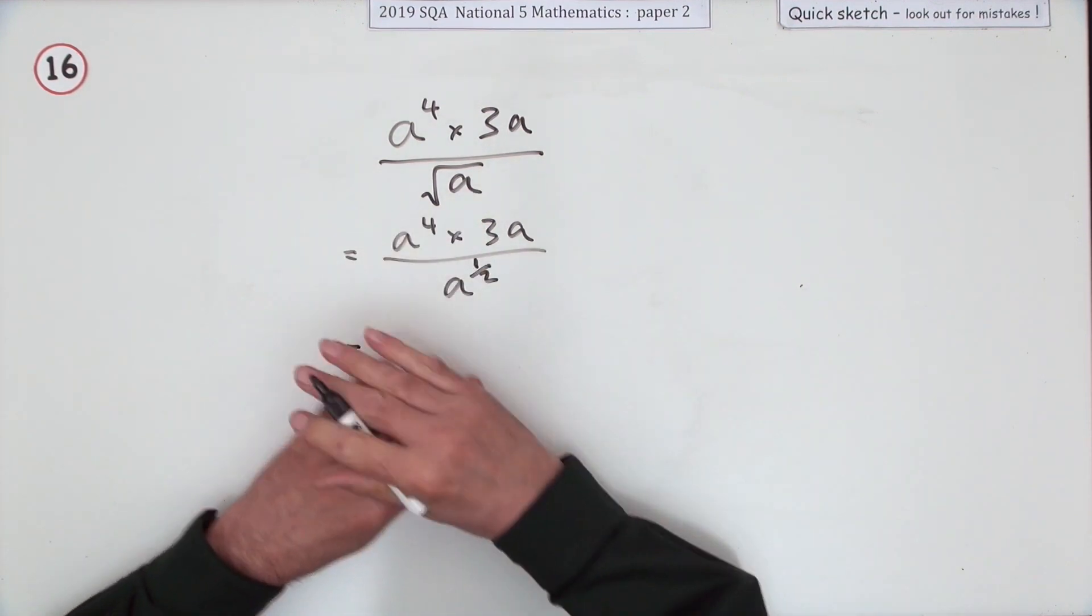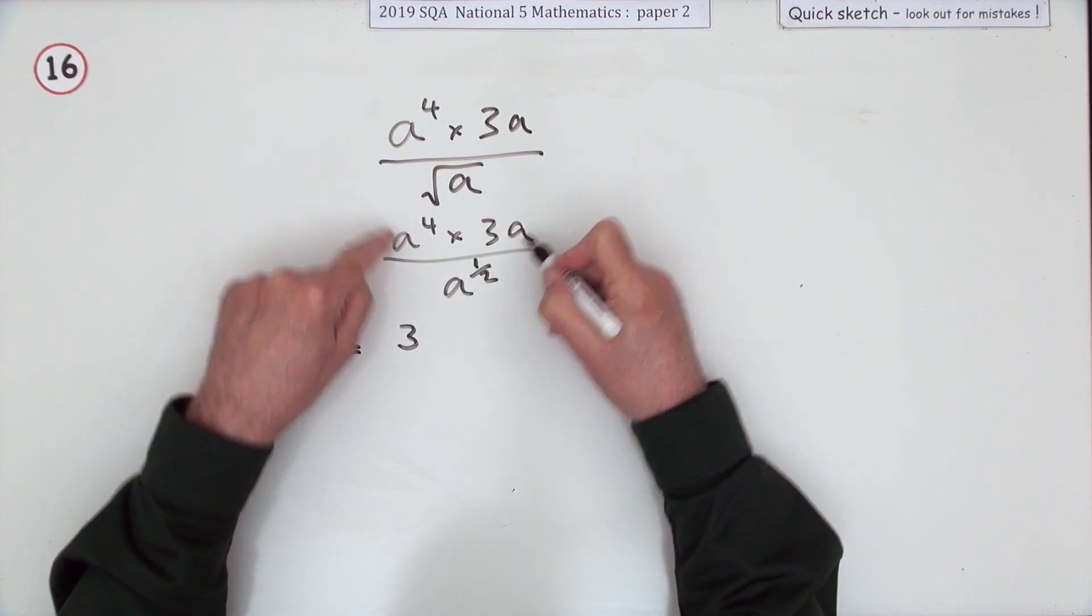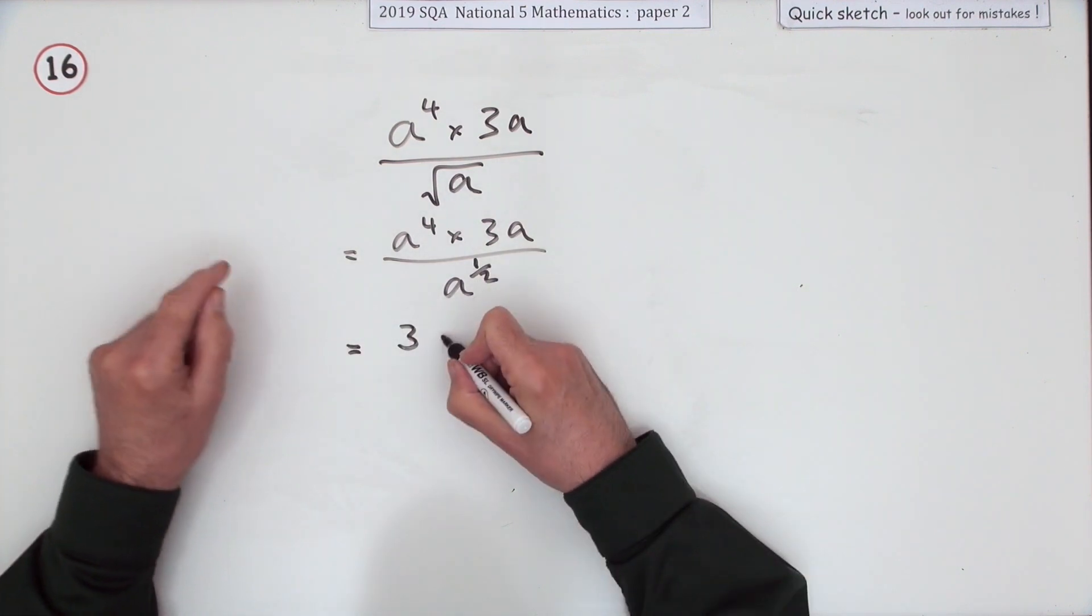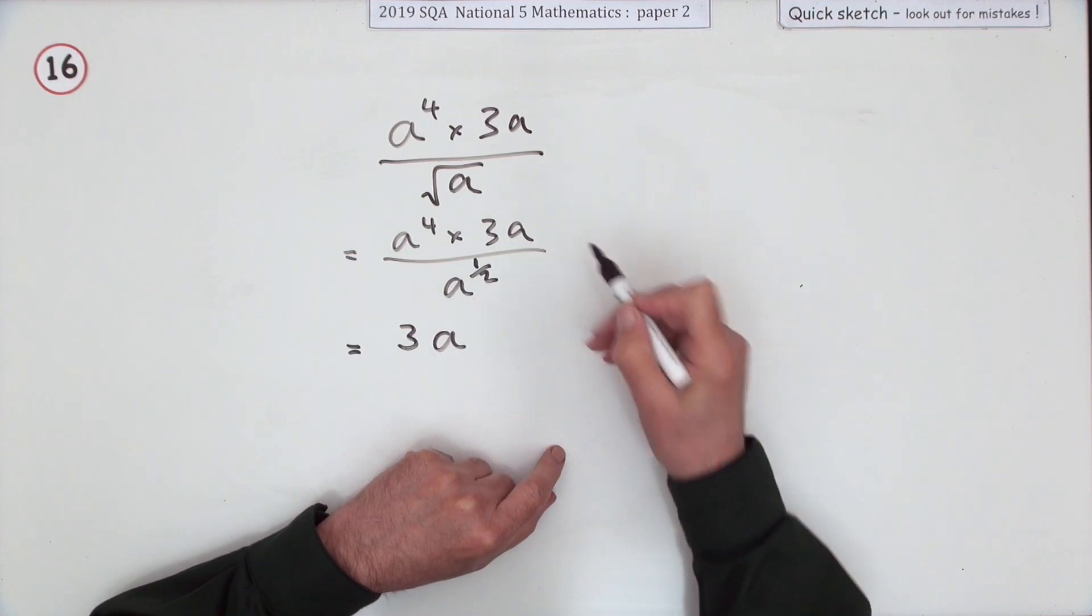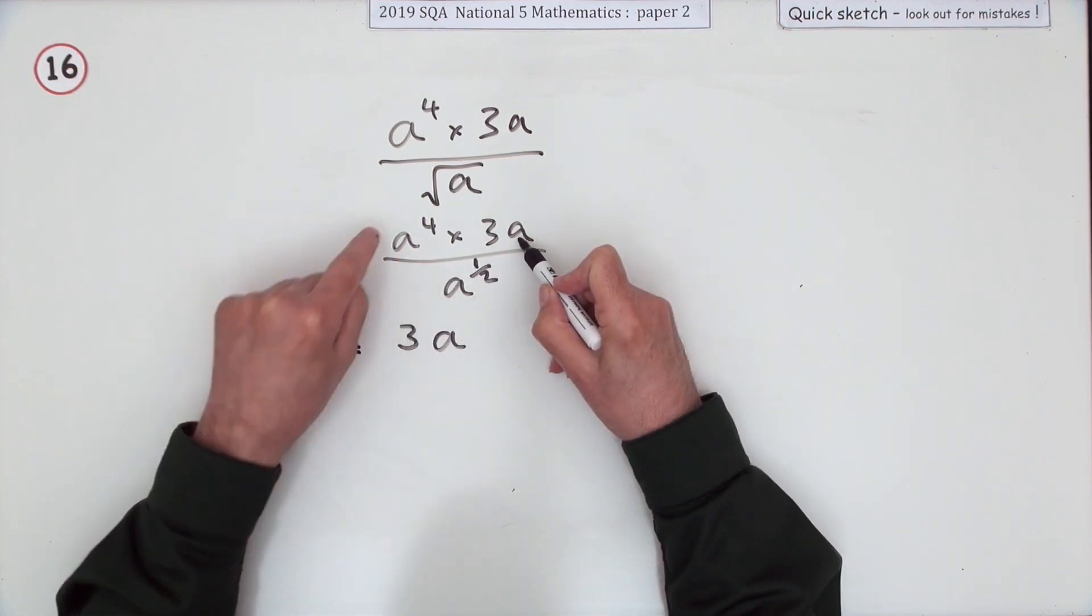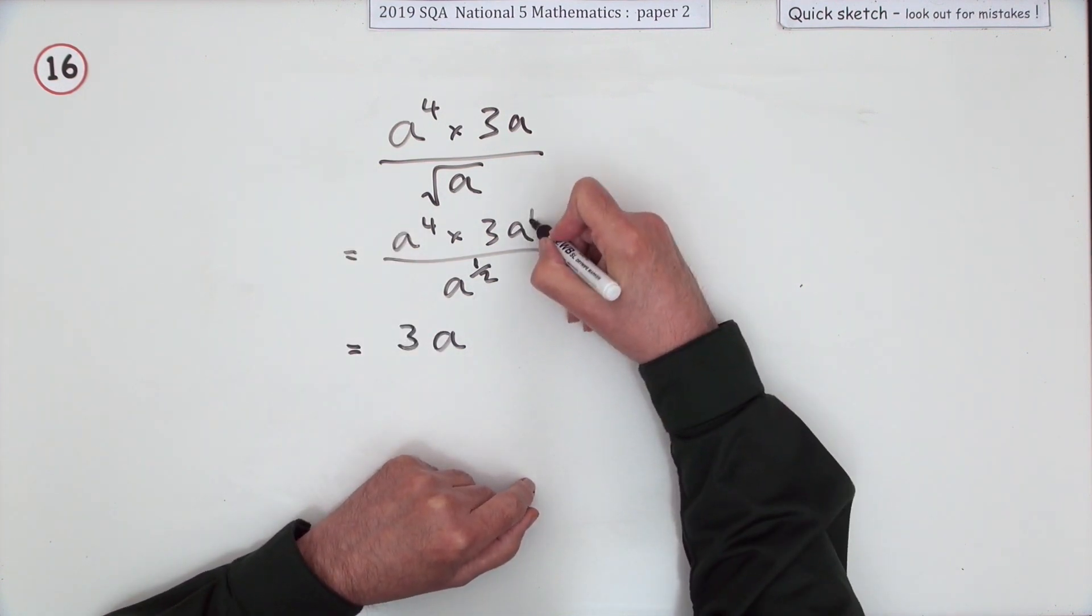There's only one number there, only one coefficient, nothing's going to affect that, so it's definitely a 3. There's only one letter, so there's only one letter in the answer - it should be 3a. Now I'm just combining it in one go. If you're multiplying terms of the same letter, you add their powers.